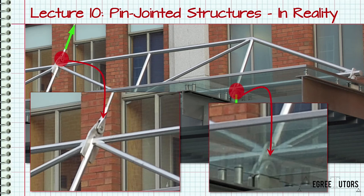To summarise: although true pin joints are occasionally fabricated, typically the joints between truss members are simply welded or bolted connections. This means they will not be free to rotate and will transmit some bending moments. Fortunately the behaviour of real structures will not deviate significantly from what our simplified model suggests, provided the loads are applied at the joints.